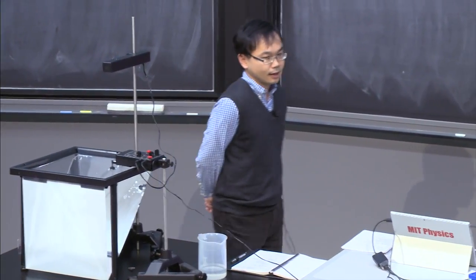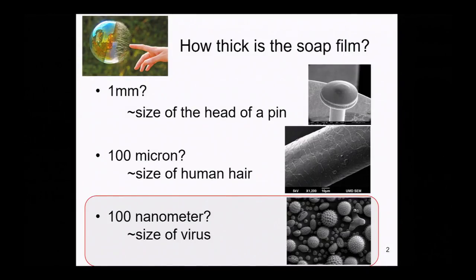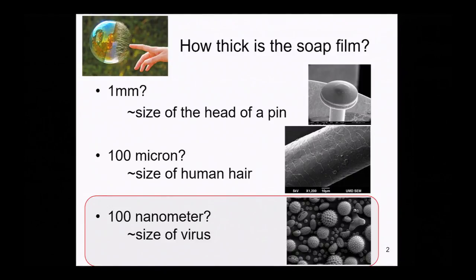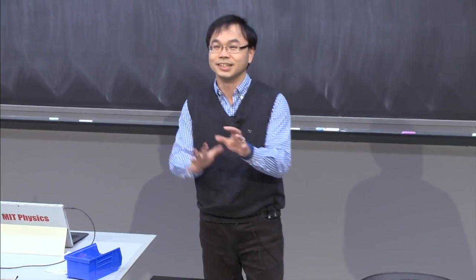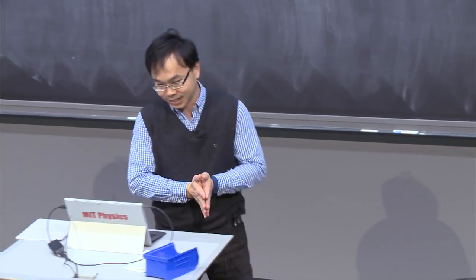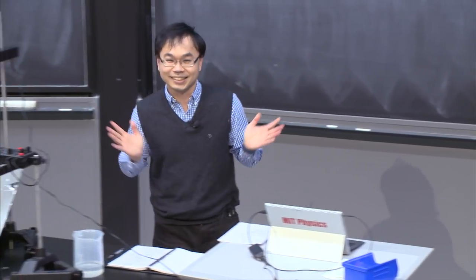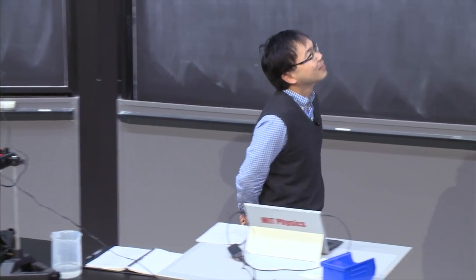We also learned about how thick the soap film is. We concluded that in order to see a colorful pattern, the thickness of the wall, or the film, should be something in the order of 100 nanometers. That's actually pretty remarkable because that's already going to be in the order of the size of a virus. So that's actually really cool.